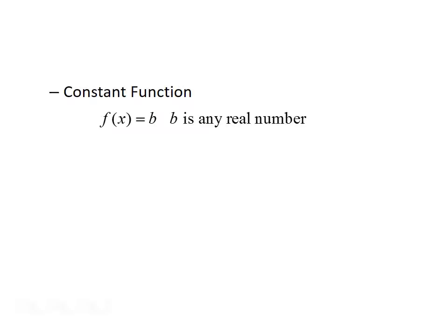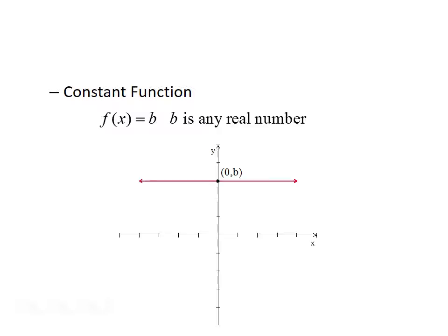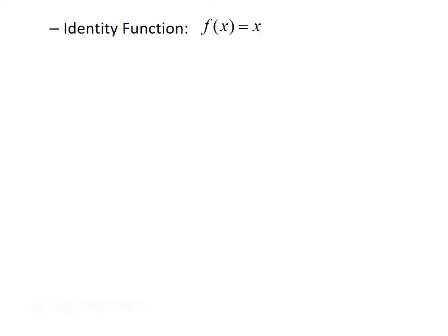The first is called the constant function. It takes the form f of x equals b, where b is any real number, and its graph is a horizontal line. The next function is the identity function, which takes the form f of x equals x, and its graph is the diagonal line that passes through the origin at a 45-degree angle.